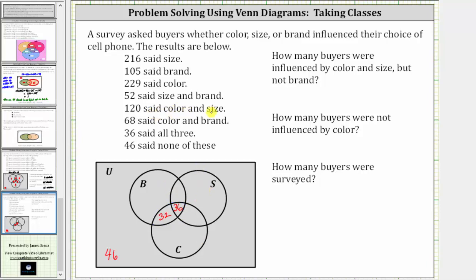Next, 120 said color and size, and therefore there are 120 buyers in the intersection of set C and set S, which is this set here. There are already 36 buyers in this set, and 120 minus 36 equals 84, so there are 84 buyers in this region. Next, 52 said size and brand, so there are 52 buyers in the intersection of set S and set B. There are already 36 buyers in that set, and 52 minus 36 equals 16, leaving 16 buyers in this region.